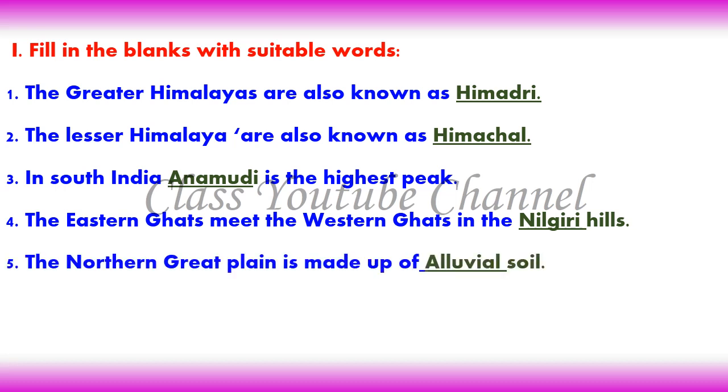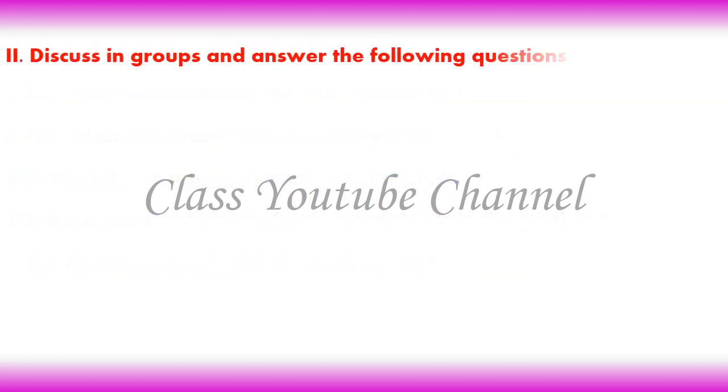5. The Northern Great Plain is made up of alluvial soil.